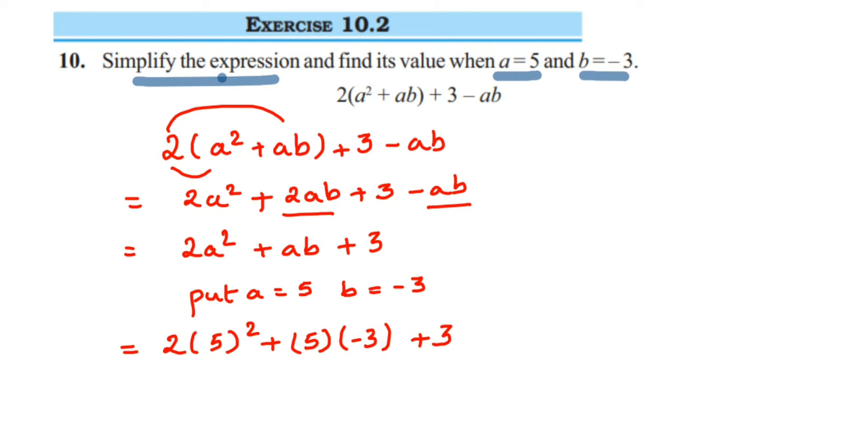We have 5. 2 into 5 square is 25. So, 2 into 25 plus 5, 3 inside is 15. There is a negative sign, so we will get minus 15 plus 3. I am going to solve this side. 2 into 25 is 50. So, we will get here 50 minus 15 plus 3.